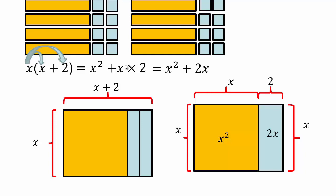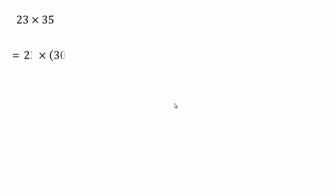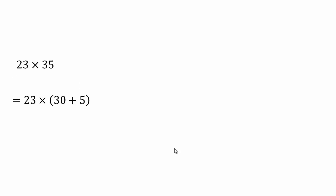Multiplication distributing over addition. Can we do that same process here? So we have 23 times 35, which is the same as 23 times 30 plus 5. I can write 35 as 30 plus 5. Multiplication distributes over addition, so let's do that.